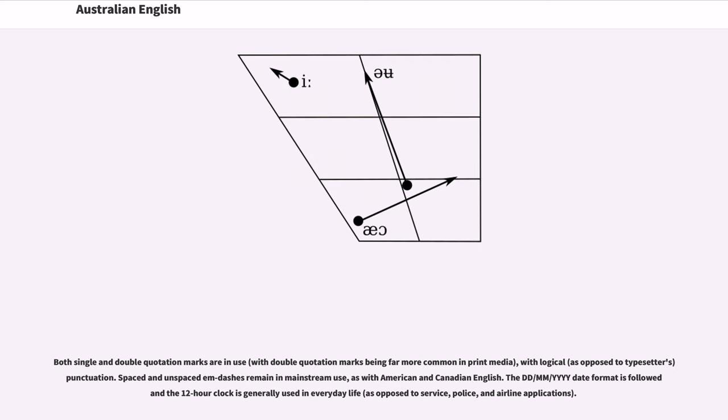Both single and double quotation marks are in use, with double quotation marks being far more common in print media, with logical, as opposed to typesetters', punctuation. Spaced and unspaced em-dashes remain in mainstream use, as with American and Canadian English. The DD/MM/YY date format is followed and the 12-hour clock is generally used in everyday life, as opposed to service, police, and airline applications.